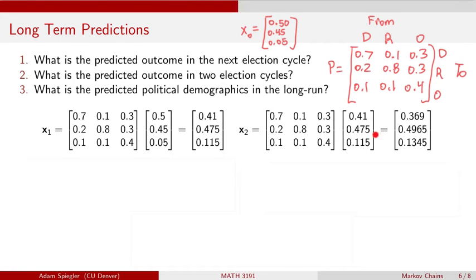Then to make a prediction for the next election cycle, we then use as our current state X1. To make a prediction for X2, we multiply X1 by this same transition matrix, and that gave us a vector out, which was 0.369, 0.4965, 0.1345. So this told us this first entry that the Democratic candidate is predicted to get 36.9% of the vote in two election cycles is how we can interpret that entry. And similarly, interpret the 0.4965 as the percentage of the vote that a Republican candidate would get in two election cycles in the future.